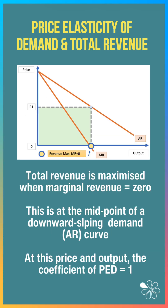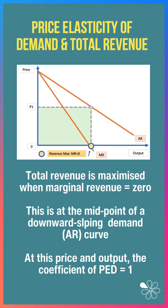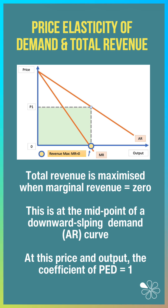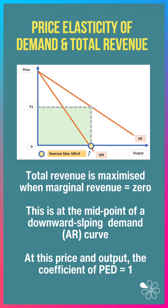Total revenue is maximized when marginal revenue is zero, and this is at the midpoint of a downward sloping demand curve AR. At this price and output, the coefficient of elasticity of demand equals one.